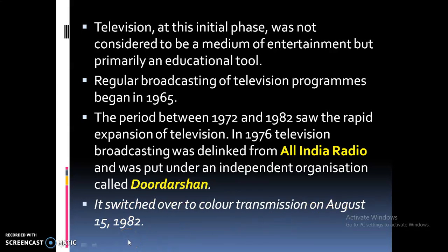Peter Goldmark is the one who introduced the color television system. His system produced color pictures by spinning a red, blue, and green wheel in front of a cathode ray tube. In 1948, cable television was introduced in Pennsylvania as a means of bringing television to rural areas.